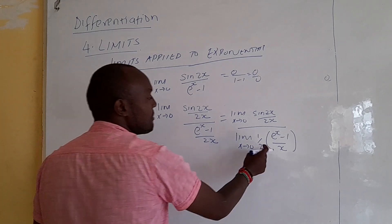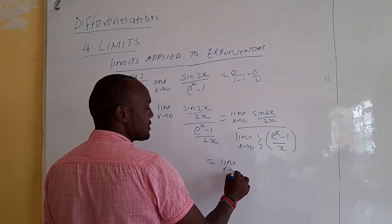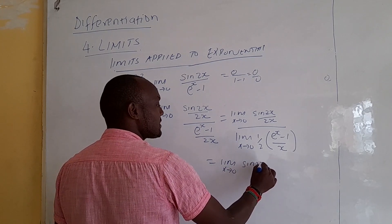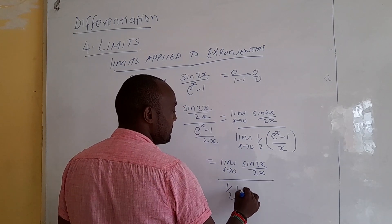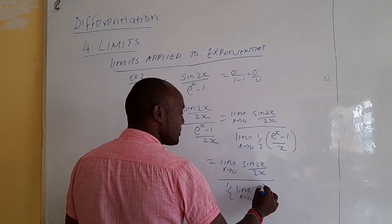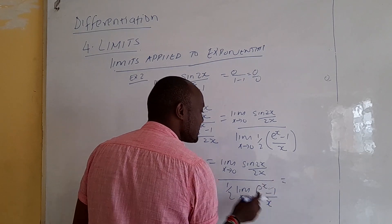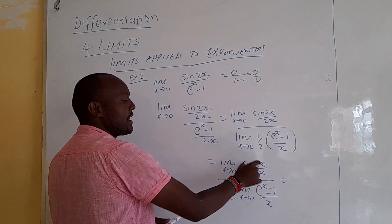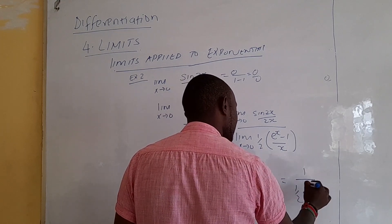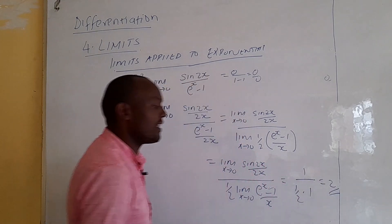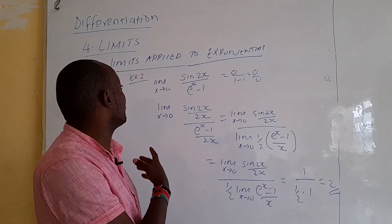Using the constant rule, we bring out the 1/2. The limit of sin(2x)/(2x) as x approaches 0 is 1, and the limit of (e^x - 1)/x as x approaches 0 is also 1. So we have 1 divided by (1/2 times 1), giving an answer of 2.